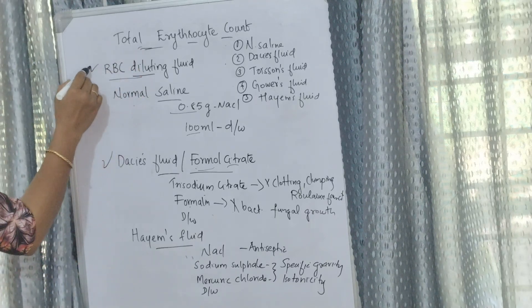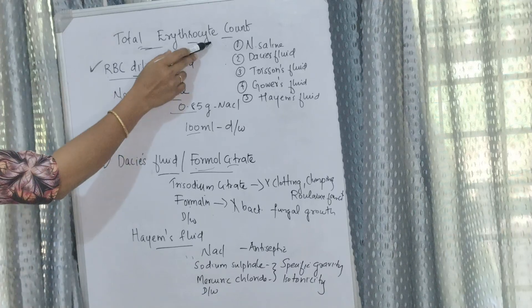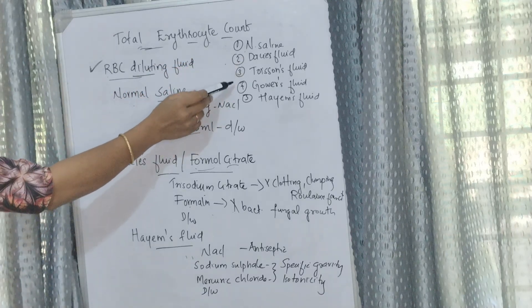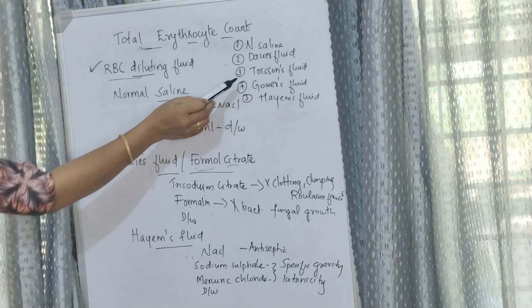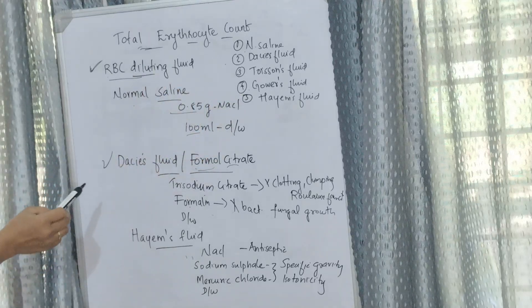We have to discuss RBC diluting fluid. Diluting fluids commonly used for RBC count are normal saline, Dacie's fluid, Toisson's fluid, Gower's fluid, and Hayem's fluid.